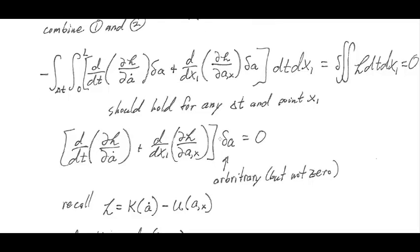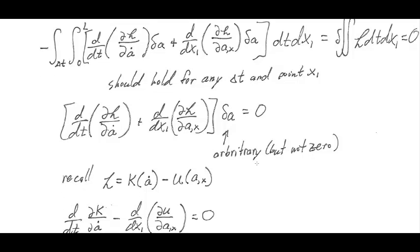Second important thing, remember we're taking guesses. So this delta A can be arbitrarily anything, preferably not zero, so we can divide it out.